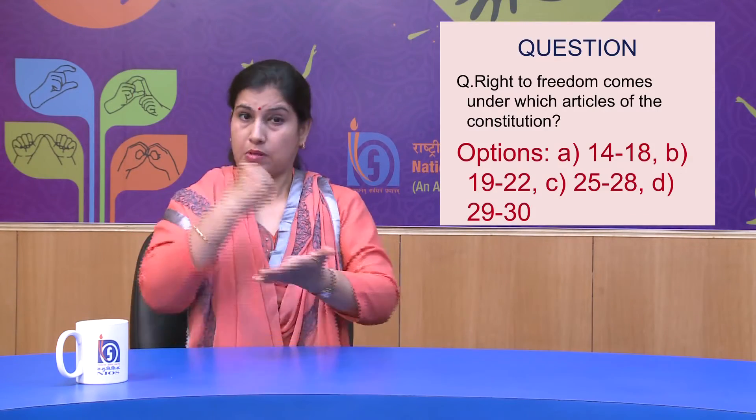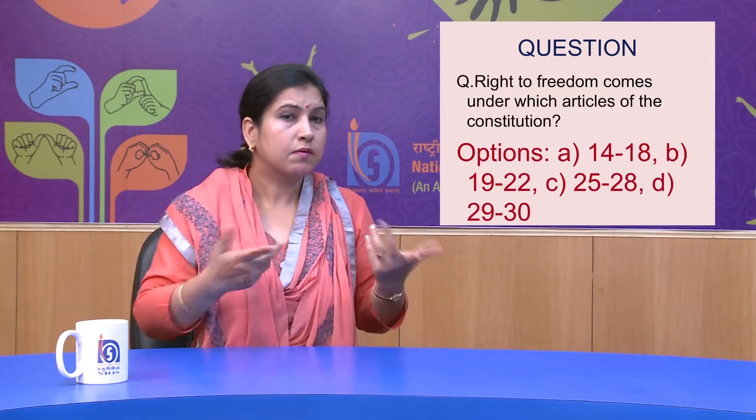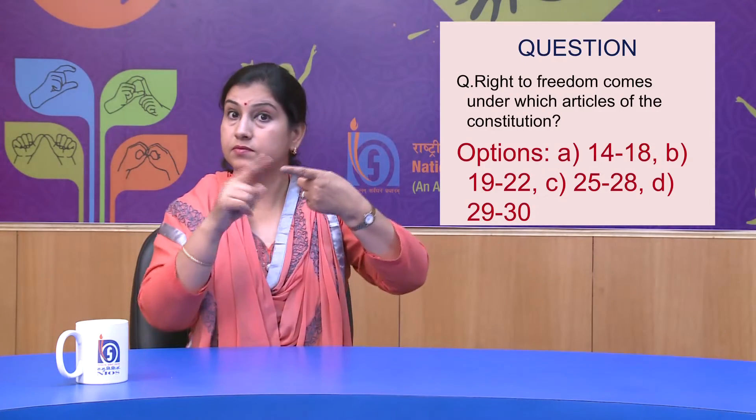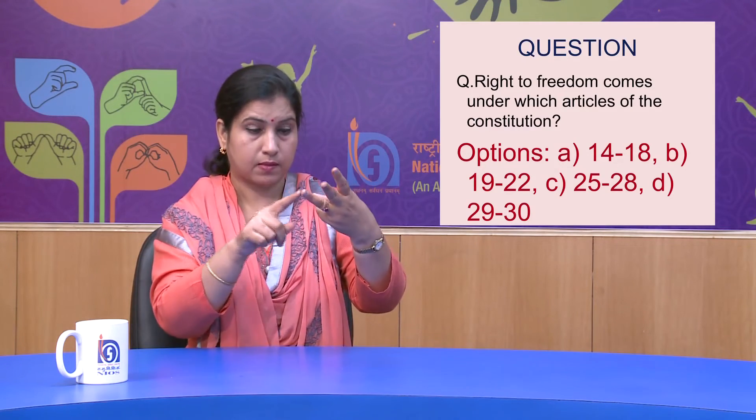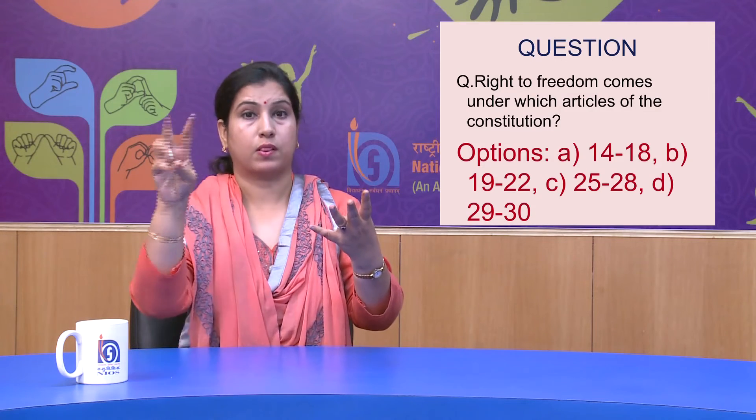Learners, before revising this lesson, let me ask you a question based on today's lesson. The question is: right to freedom has been included under which articles of the constitution? First option is 14 to 18, second option is 19 to 22, third option is 25 to 28, and fourth option is 29 to 30. The correct option is the second option — article number 19 to 22 of the constitution.